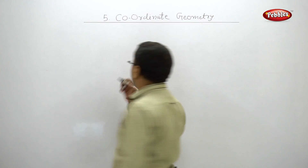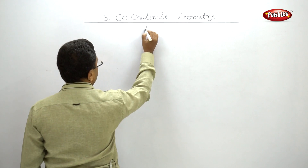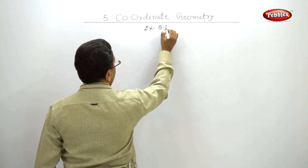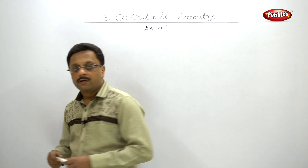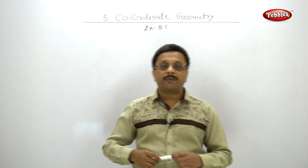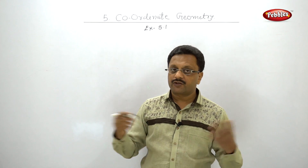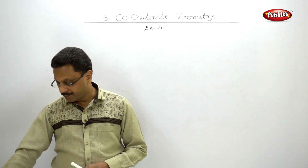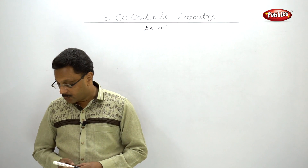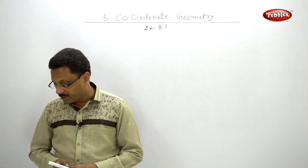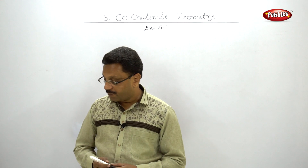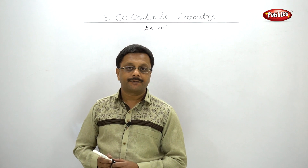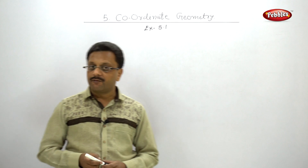Let us solve Exercise 5.1, which is based on the concept of slope. We have seen a few examples already. The first question asks us to find the slope of the lines whose inclinations are 45 degrees, 30 degrees, and 90 degrees.